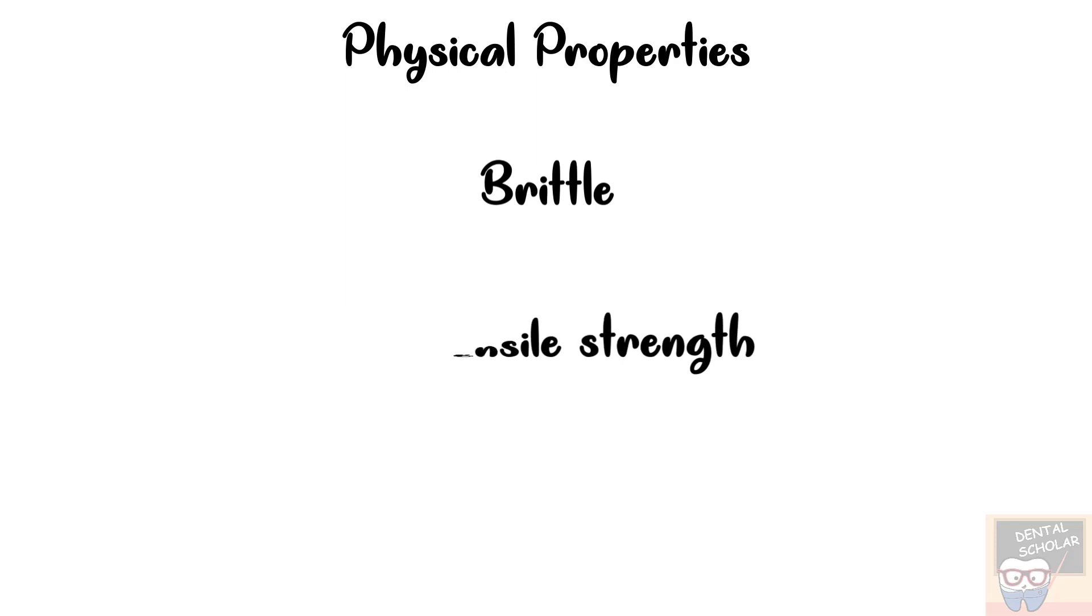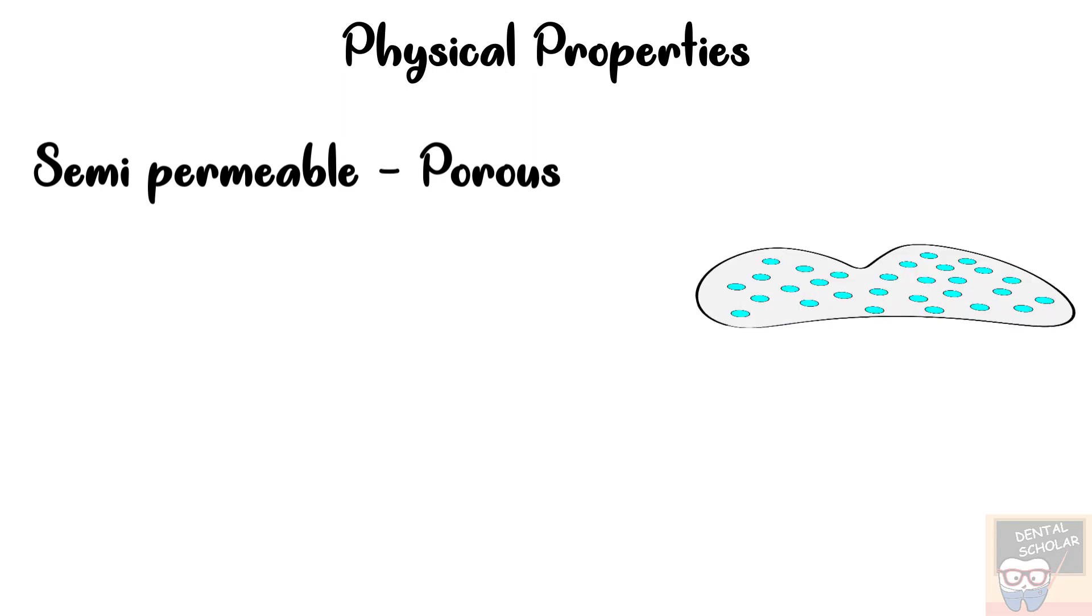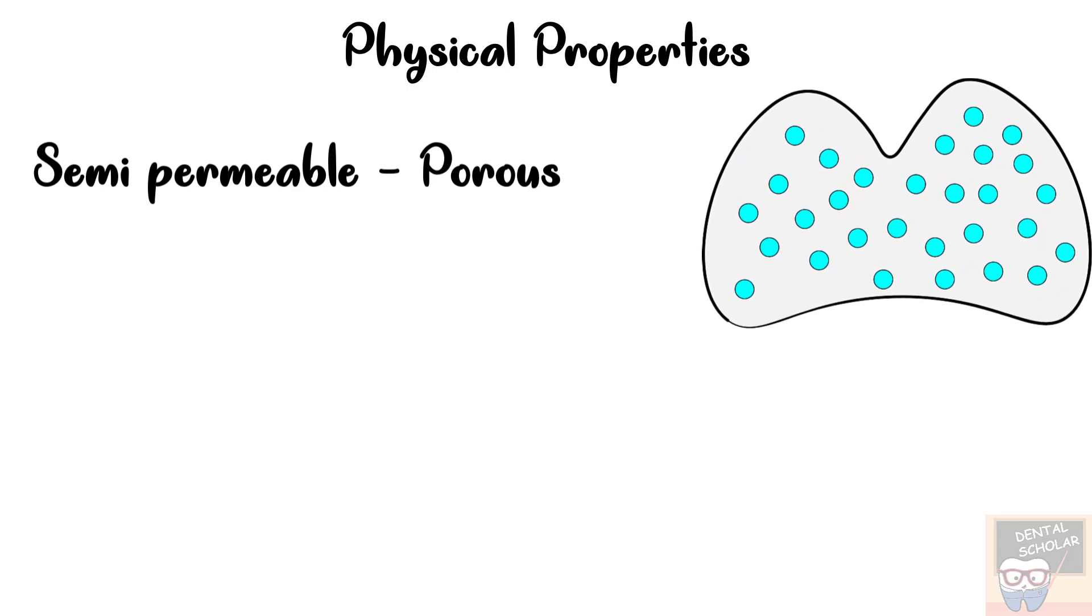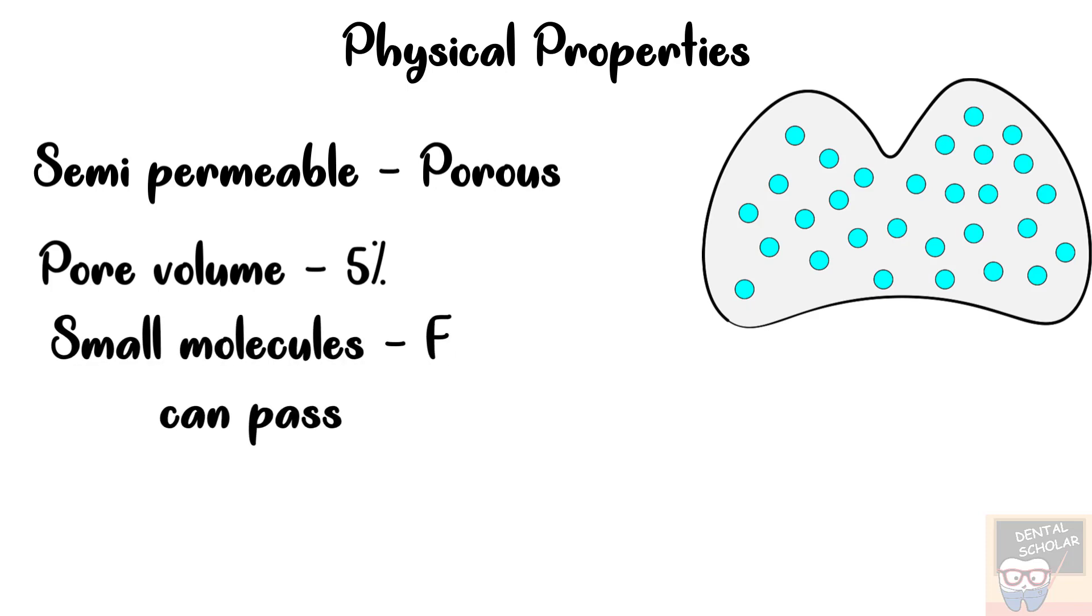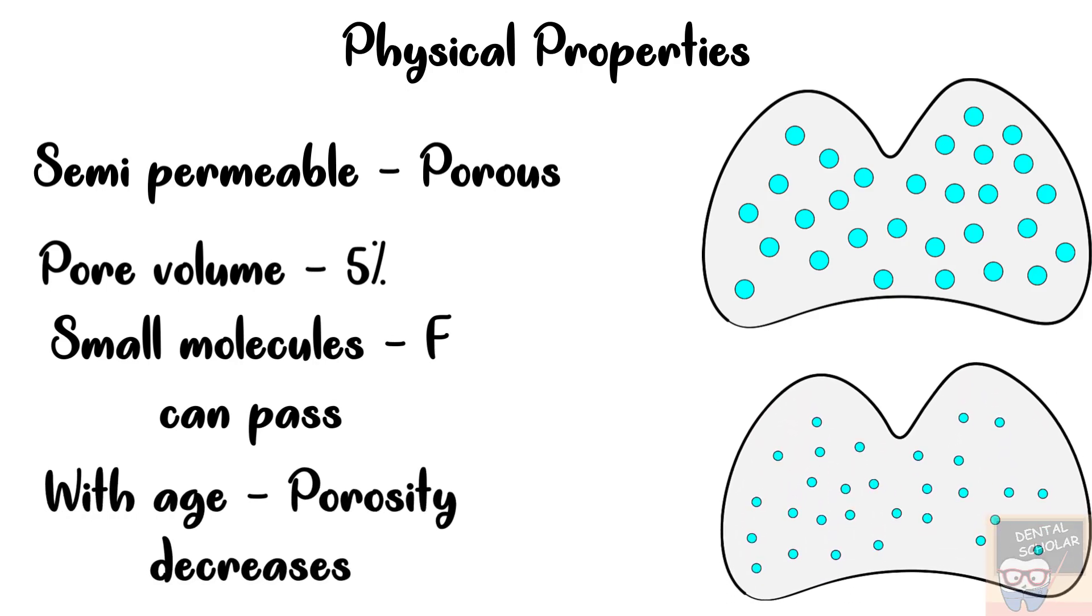Enamel behaves like a semi-permeable membrane. It is porous and it has a pore density of about 5%. So what it means is that of the total volume of enamel about 5% is formed by porosities. In a newly erupted tooth, the pore density is 5% and small molecules like fluoride can pass through these porosities easily. With age, the enamel becomes more mineralized and the pore density or the pore volume decreases.